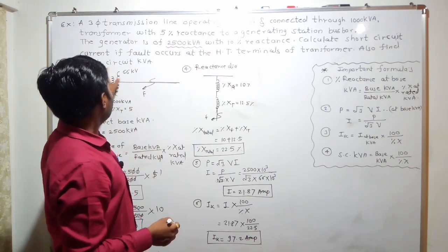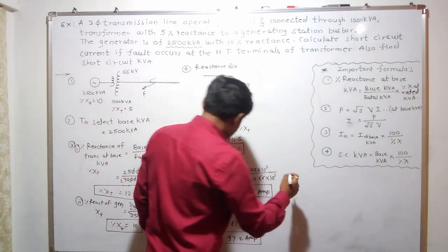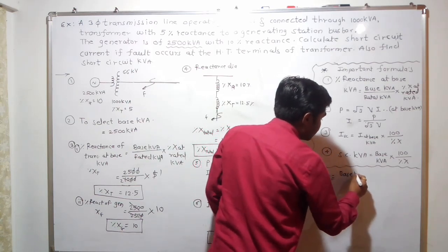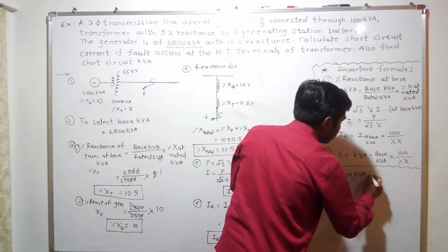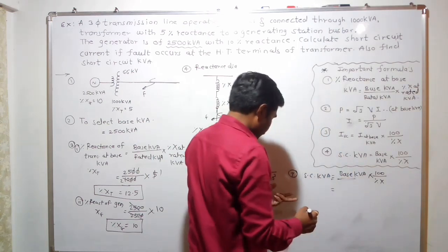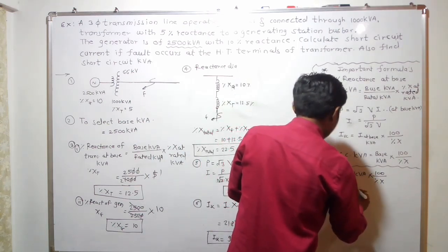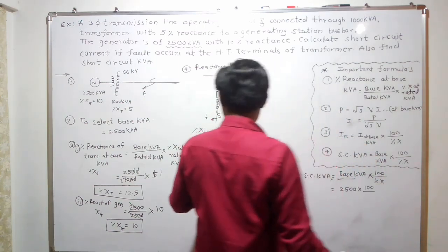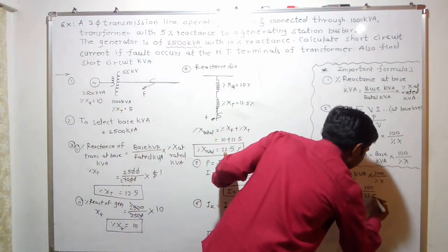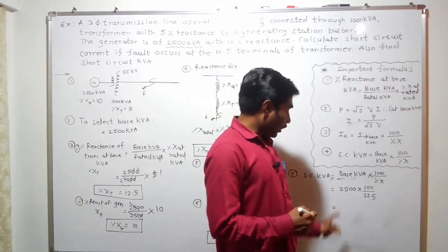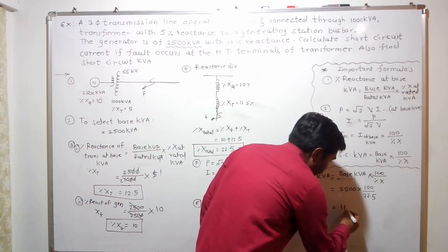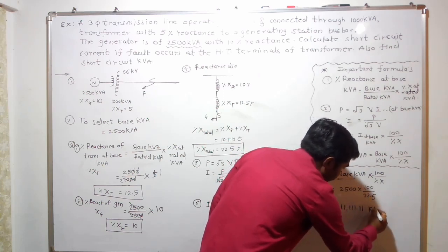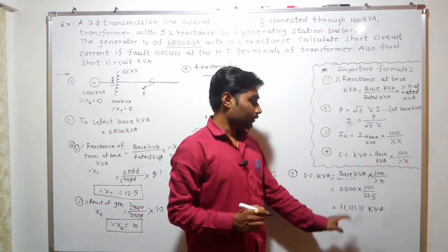The seventh step is to calculate the short circuit kVA. The formula is: short circuit kVA = base kVA × 100 / percentage X. Base kVA is 2500, and total percentage reactance is 22.5. So short circuit kVA = 2500 × 100 / 22.5 = 11,111 kVA, approximately 11.11 MVA. This is the value of short circuit kVA at the point of fault.